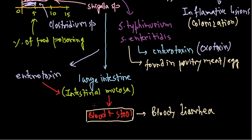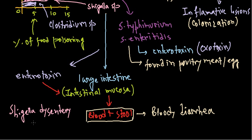The specific strain of Shigella causing this disease is called Shigella dysenteriae, causing a condition known as shigellosis, or bacterial dysentery, which is a very common disease. Recovery from this disease typically takes three to seven days, making it a relatively prolonged illness.